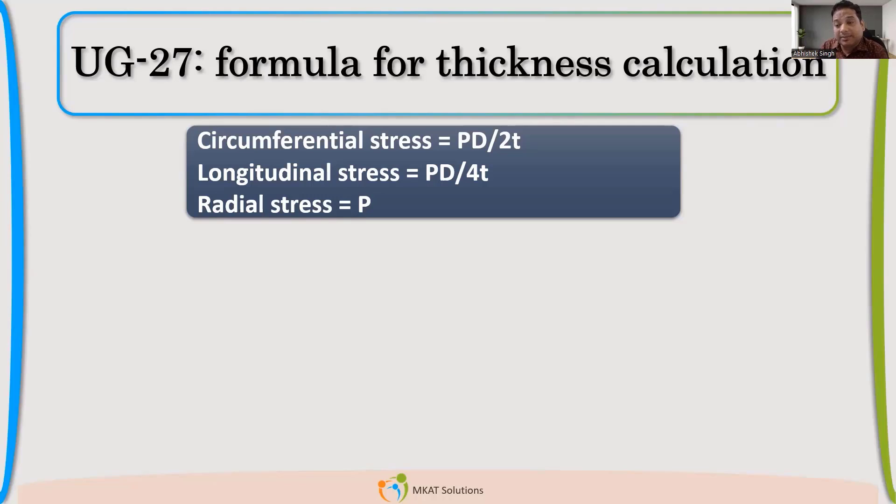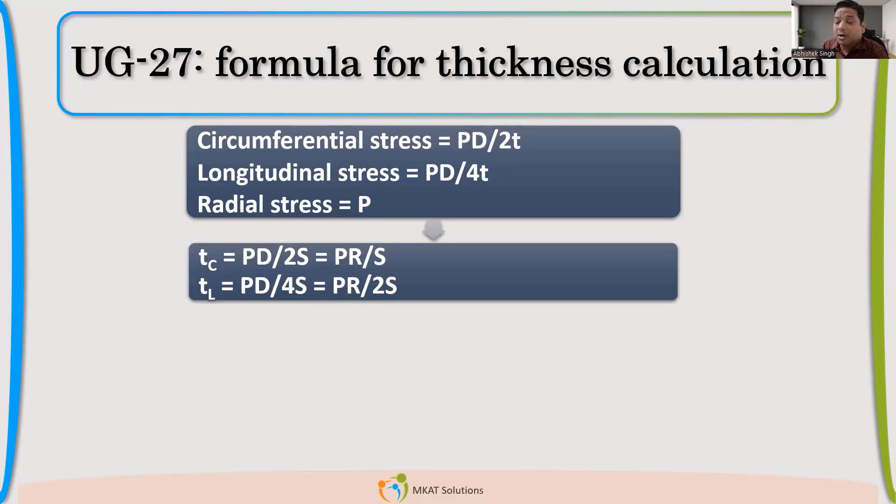So PD/2T, PD/4T and P are the three different stresses. Now just try to figure out what we are trying to do here. We are not trying to find the stresses. If I want to use PD/2T, circumferential stress equals PD/2T. Because if I'm trying to find out stress, thickness is also unknown. So if there are two unknowns, I won't be able to use that formula.